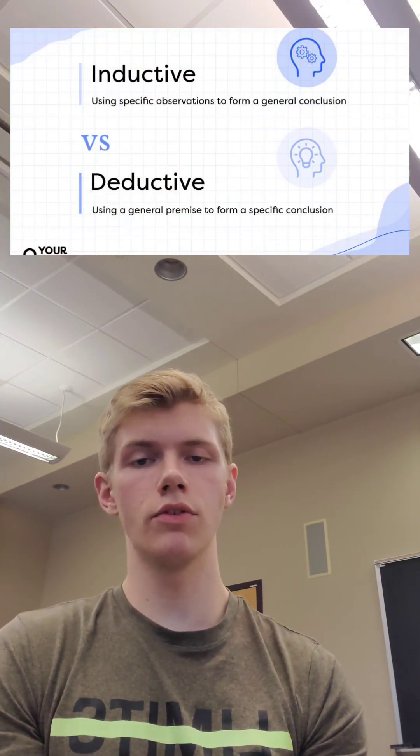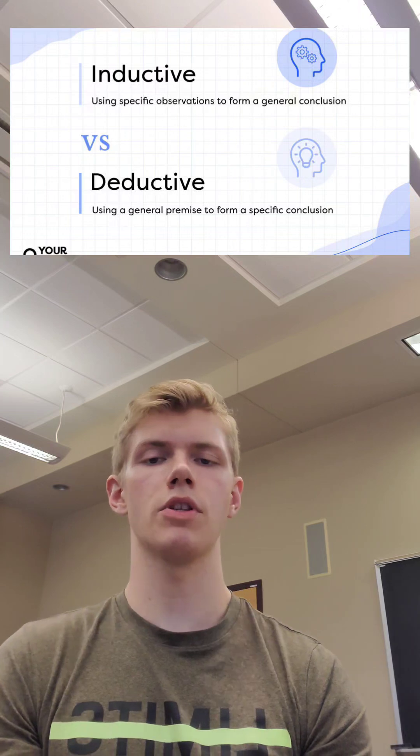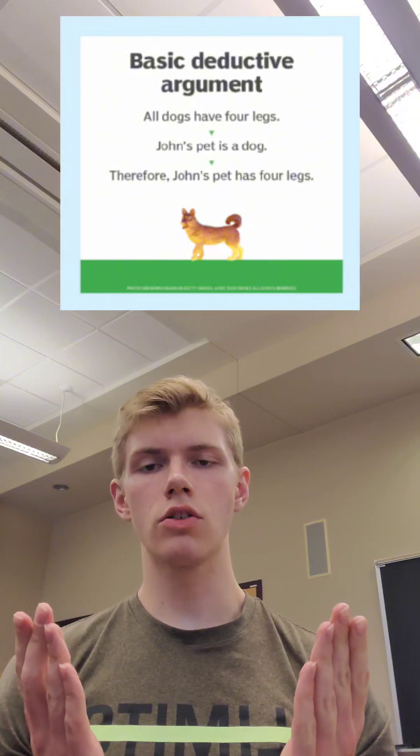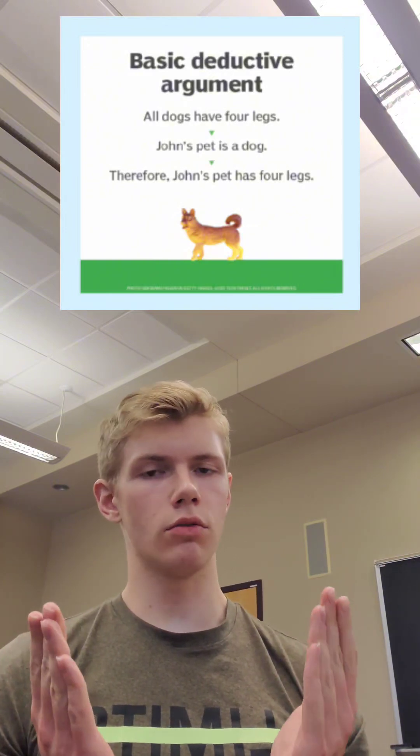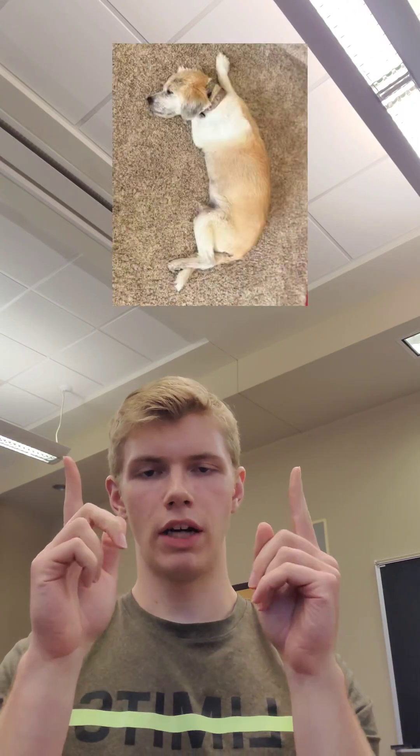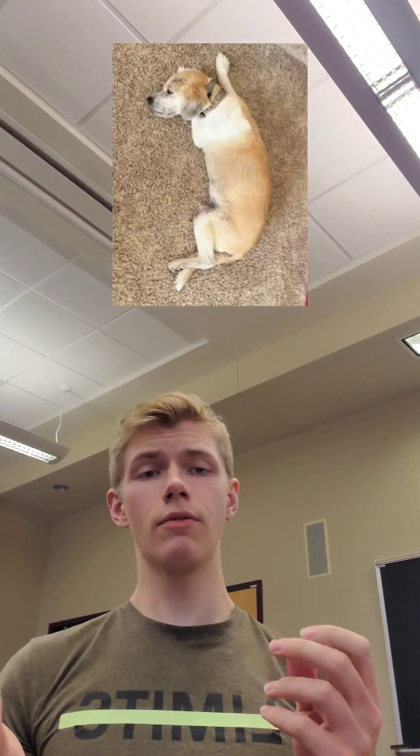Now, deductive reasoning is a bit different — it makes a specific conclusion. So let's use the idea of a dog. Dogs, in general, have four legs. I don't think any of you guys would disagree with me on that. So, dogs have four legs. Now, again, my dog Molly — based on that information, that all dogs have four legs, I might be able to conclude that Molly would have four legs.